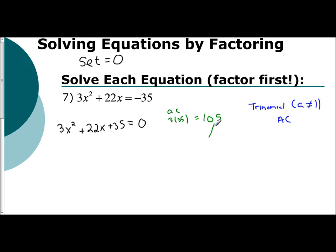And so you want two factors of 105 that add up to 22. And if I were to go through, those numbers would be positive 15 and a positive 7. And so what we do is we split the B term. We split the 22x into positive 15x plus 7x.